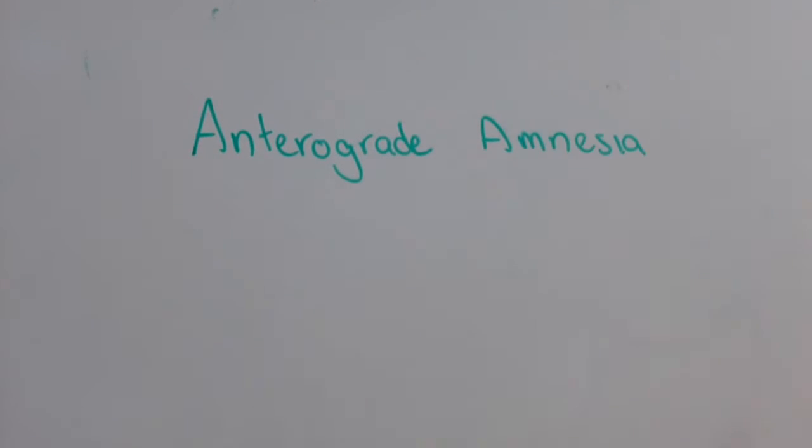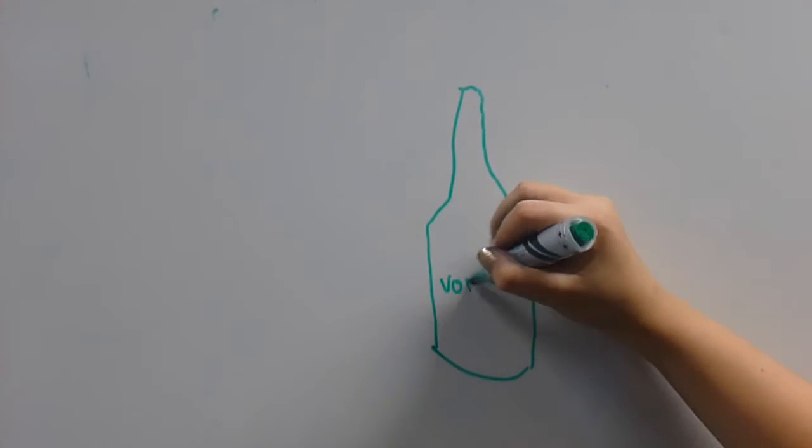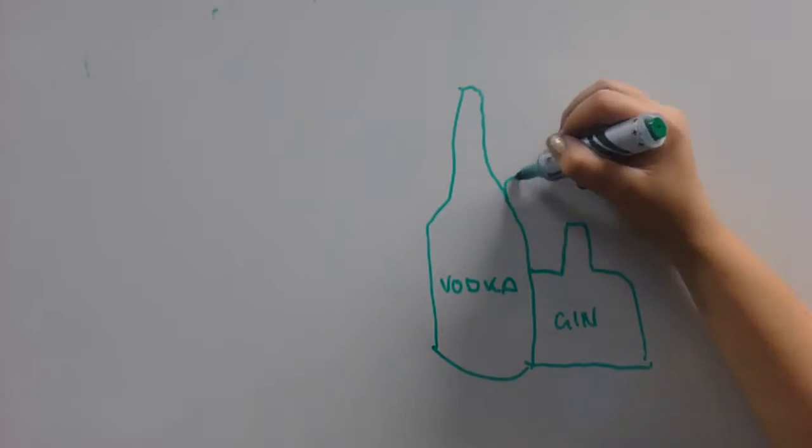Anterograde amnesia means you have difficulty making new memories and absorbing new information. For instance, alcohol-induced blackouts, a type of anterograde neurological amnesia.